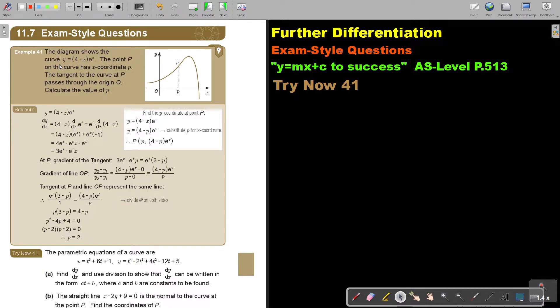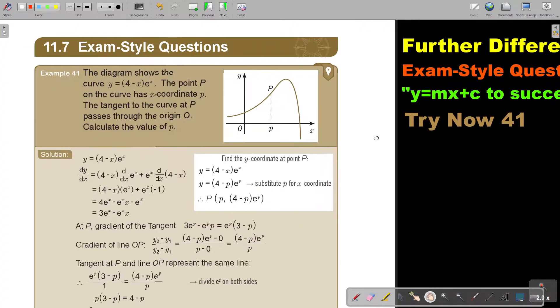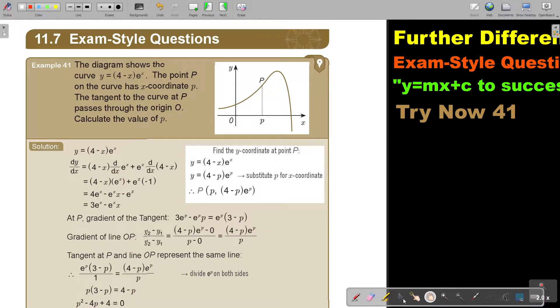Let's look at an example. The diagram shows the curve y equals bracket 4 minus x, close the bracket, e to the power of x. The point P on the curve has x coordinate of p. The tangent to the curve at P passes through the origin.